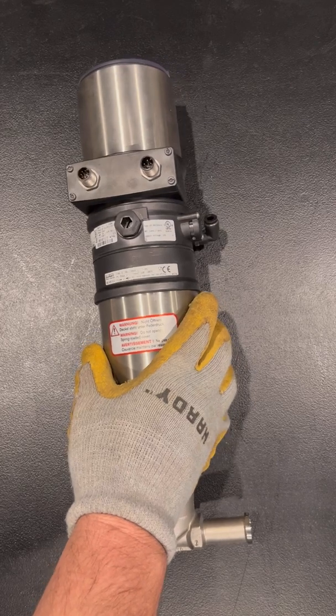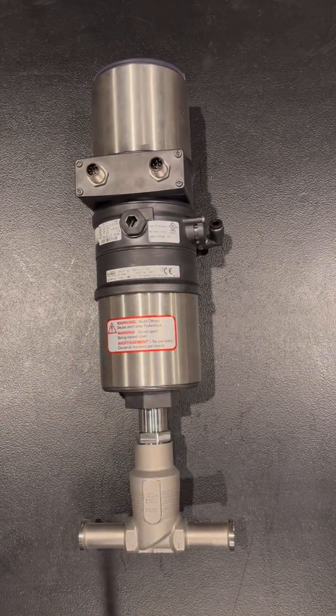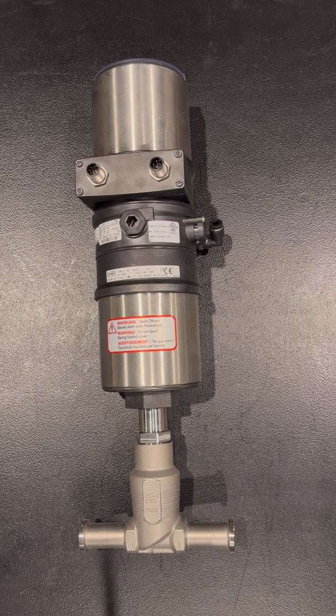This concludes the assembly of the 8692 series positioner onto the element control valve. It can now be X-tuned, installed, and used in your process.